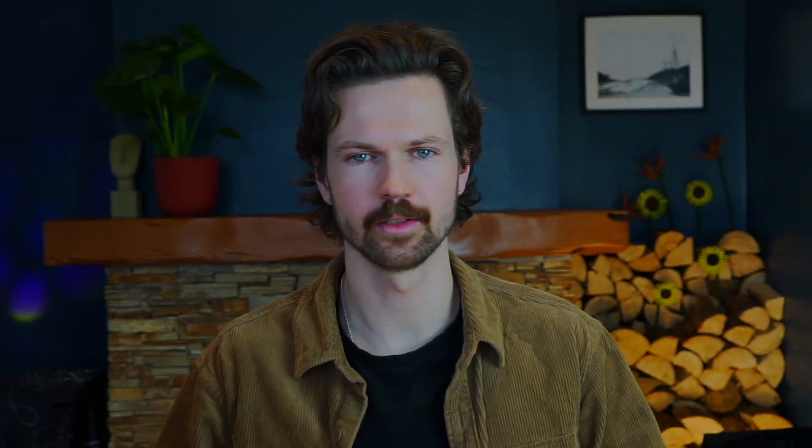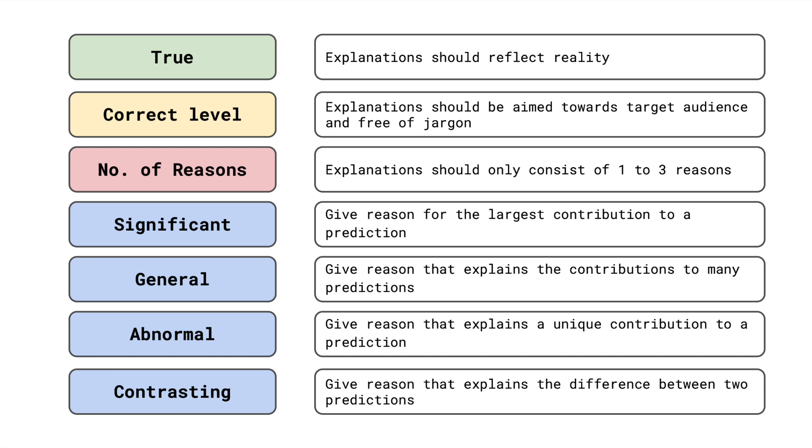We focus on the scenario of explaining individual predictions to a non-technical person. When we talk about a good explanation, we mean one that will be readily accepted — in other words, it should convince the audience that a decision was correct. To give such an explanation, there are some key characteristics that you need to consider.